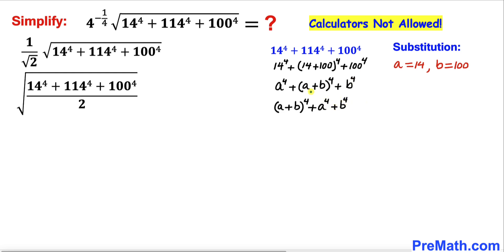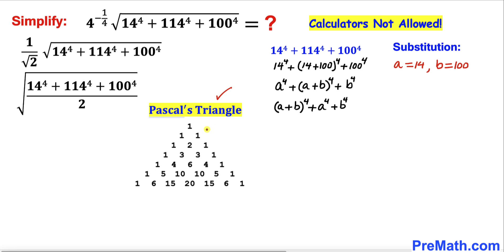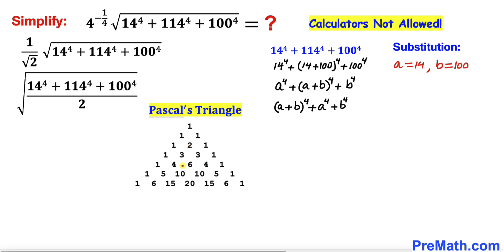In the next step I have rearranged the terms, bringing (a+b) to the power 4 to the front. Now let's expand this binomial using Pascal's triangle. In Pascal's triangle, the boundary values are all ones. Each interior number is the sum of the two numbers above it — for example, 4 plus 6 gives 10.